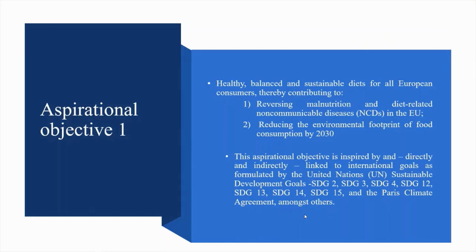The general framework of aspirational objectives sets out a common vision for the EU food chain. Aspirational Objective 1: healthy, balanced and sustainable diets for all European consumers, contributing to reversing malnutrition and diet-related non-communicable diseases in the EU and reducing the environmental footprint of food consumption by 2030. This is inspired by and linked to SDG 2 Zero Hunger, SDG 3 Good Health and Wellbeing, SDG 4 Quality Education, SDG 12 Sustainable Production and Consumption, SDG 13 Climate Action, SDG 14 Marine Protection, SDG 15 Biodiversity, and the Paris Climate Agreement, among others.